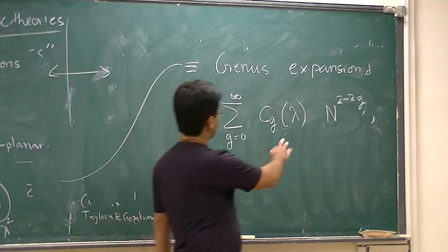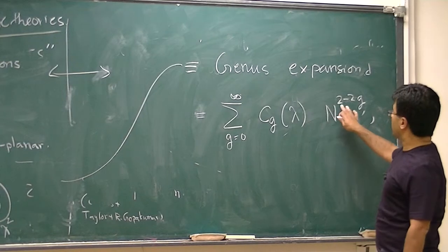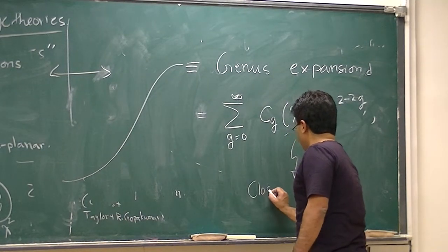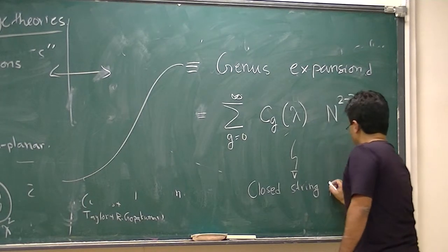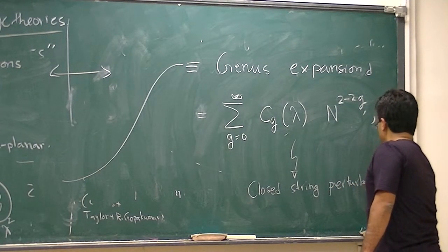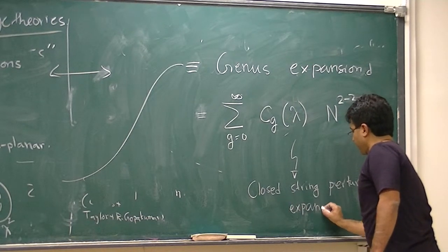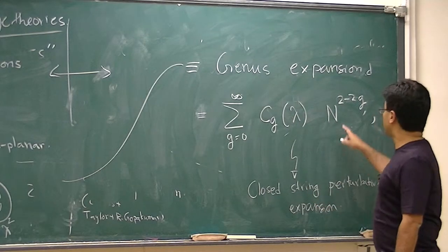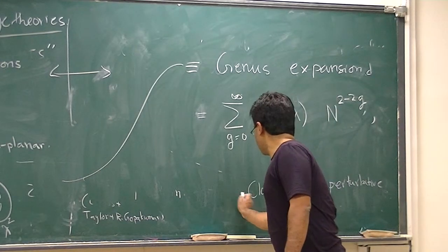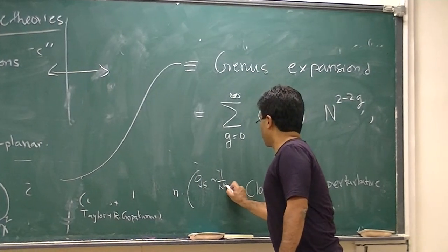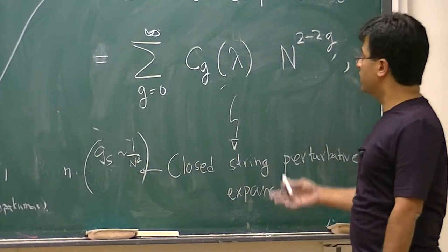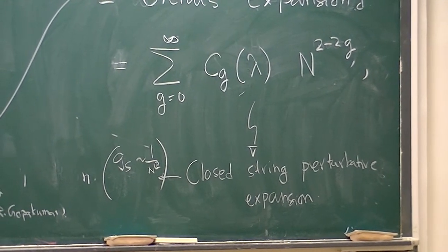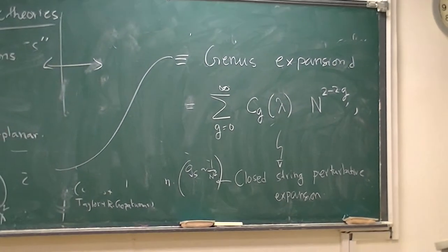The key observation that 't Hooft made, apart from this, is that this expansion as a genus expansion is extremely reminiscent of a string genus expansion — a closed string perturbative expansion — where you identify the string coupling G_string with 1/N². So if you identify the string coupling constant with 1/N², this expansion looks very much like a closed string perturbation expansion. Therefore, there was this observation that large N limits of Yang-Mills theories should somehow be related to some underlying string theory.